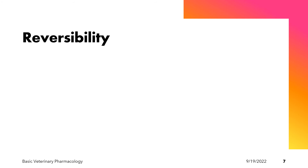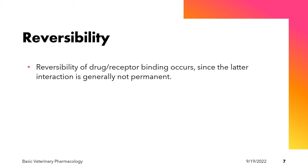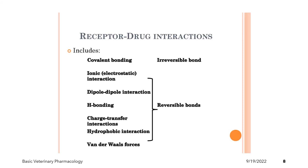The third property of drug-receptor interaction is reversibility. It occurs at the level of drug-receptor binding, since that interaction is generally not permanent — it is reversible. The reversibility of the interaction between a drug and its receptor is influenced by the type of chemical bond between them. Some bonds are considered irreversible; for example, when there is a covalent bond between the drug and the receptor, it is a high-energy bond and the interaction is considered irreversible.